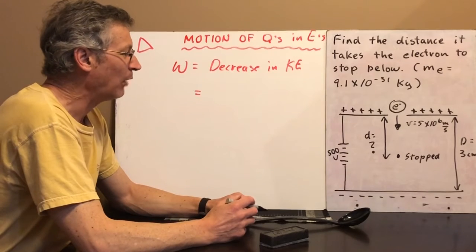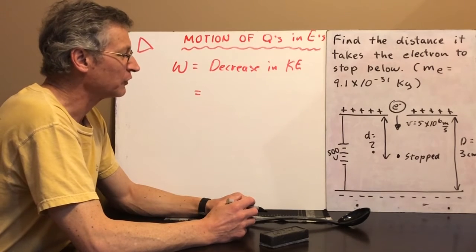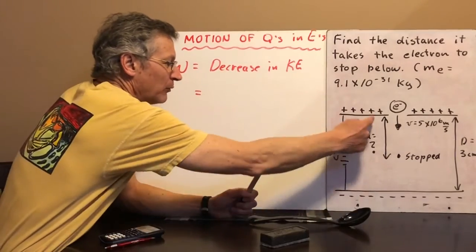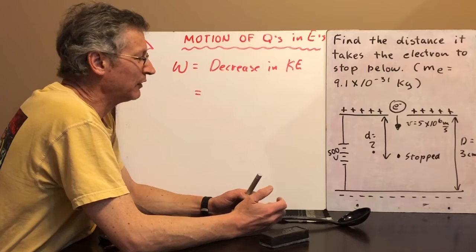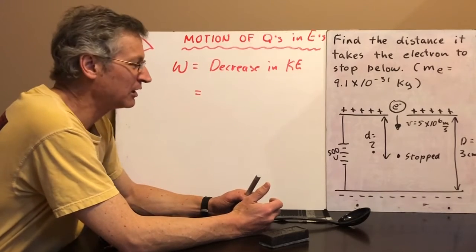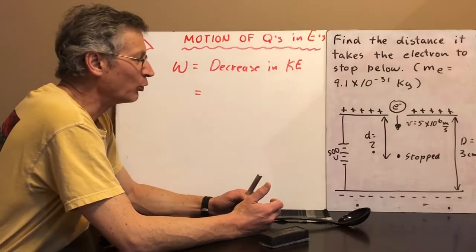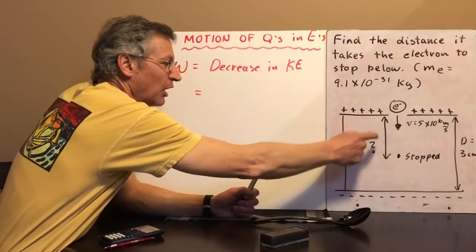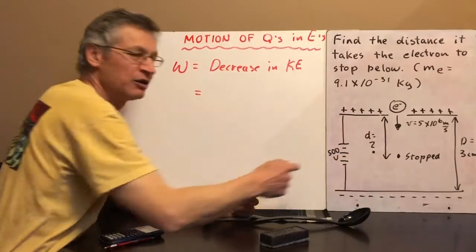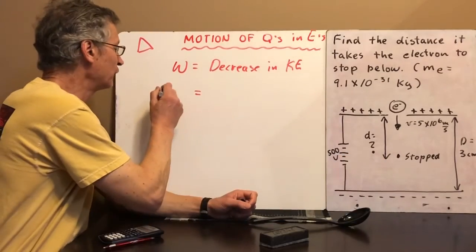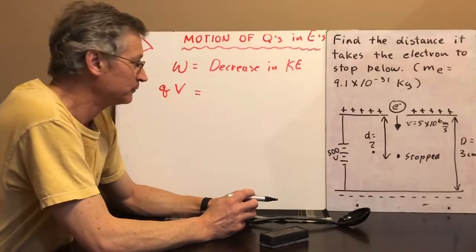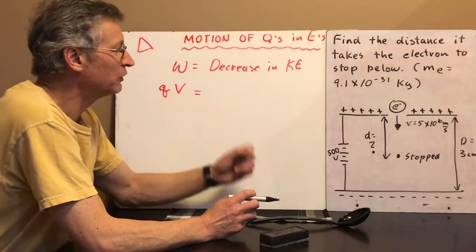So how much work is done on this electron? Well, work is equal to force times distance, but I'm going to have a heck of a time calculating the force. How about this? The work done is going to be equal to the charge times the potential difference the charge moves through. Work is equal to QV.